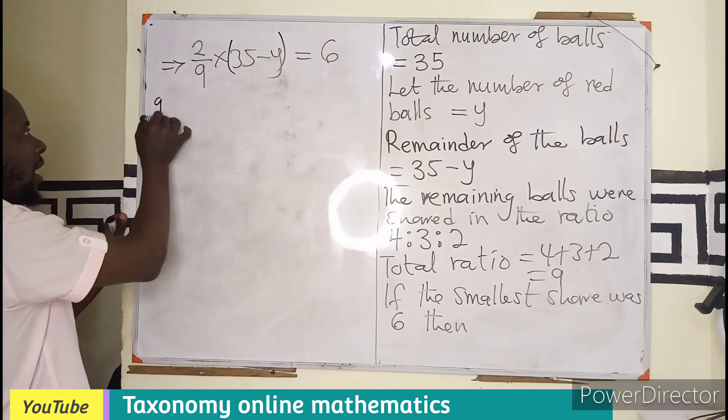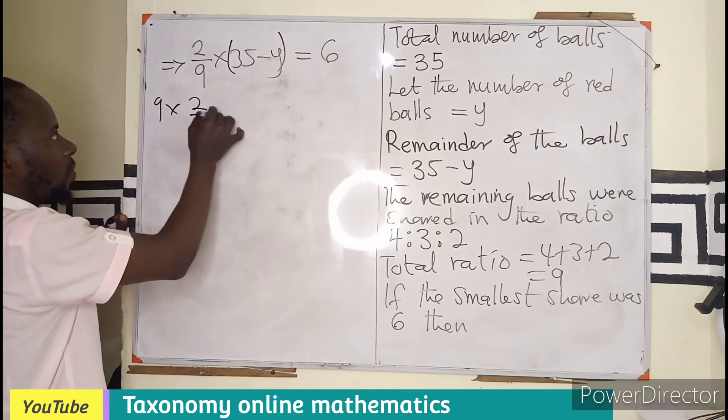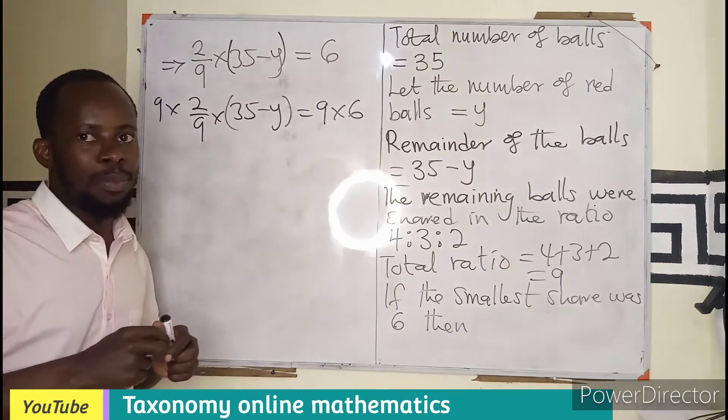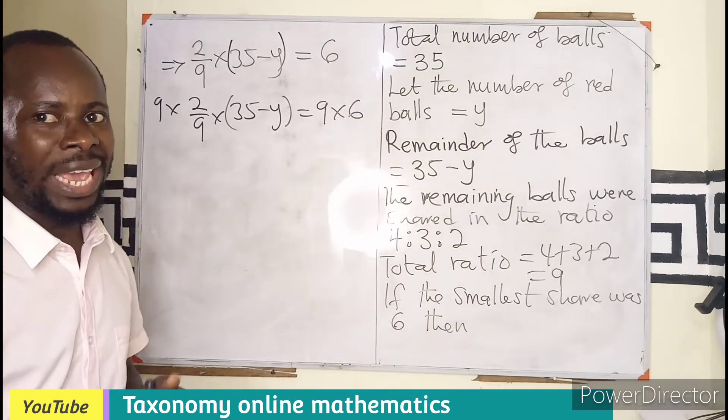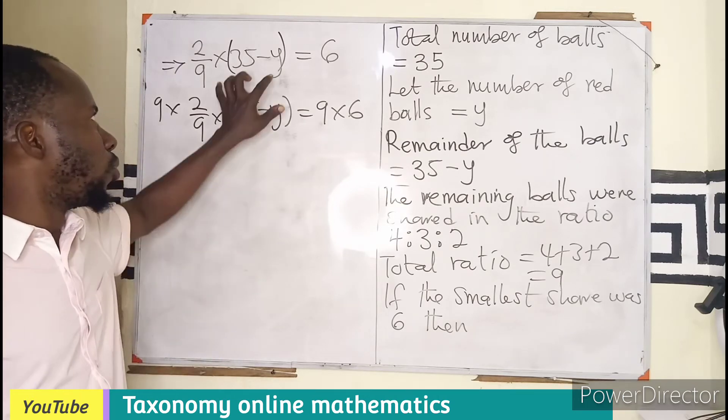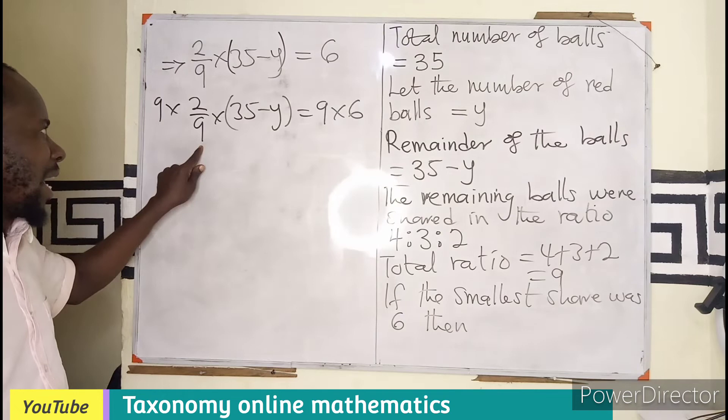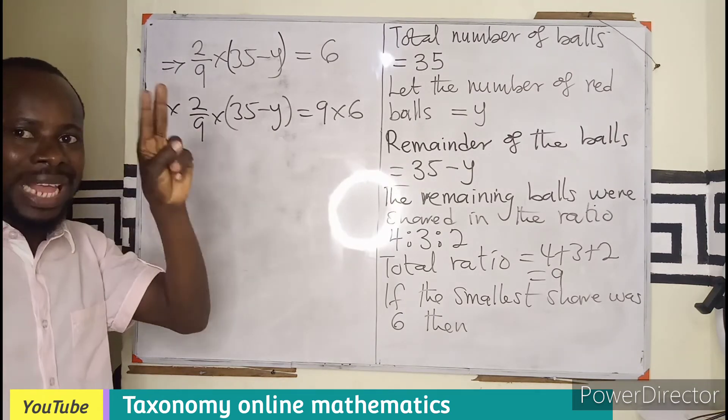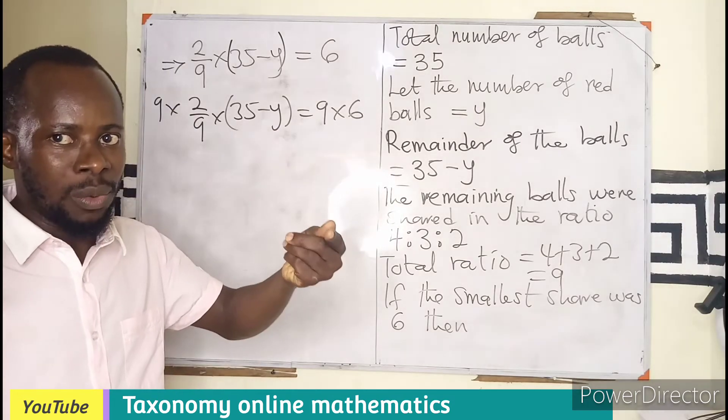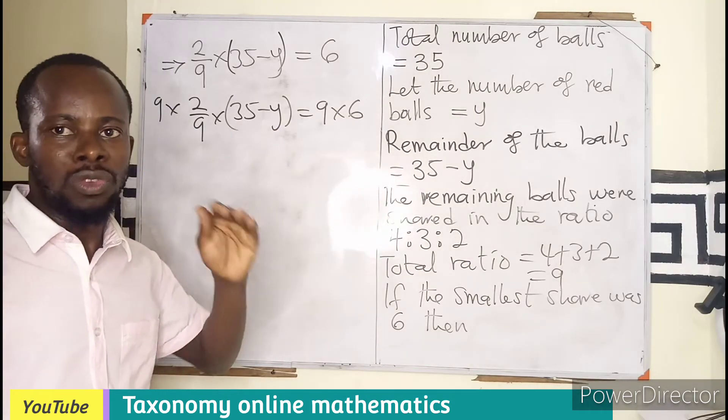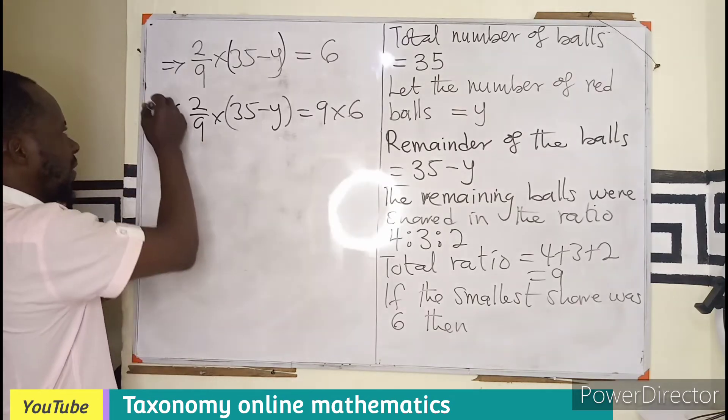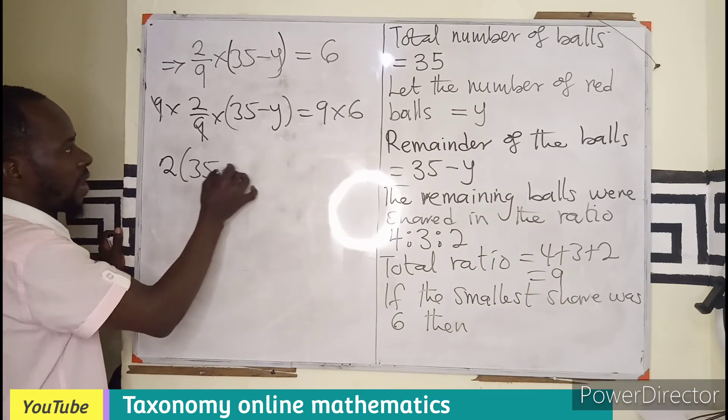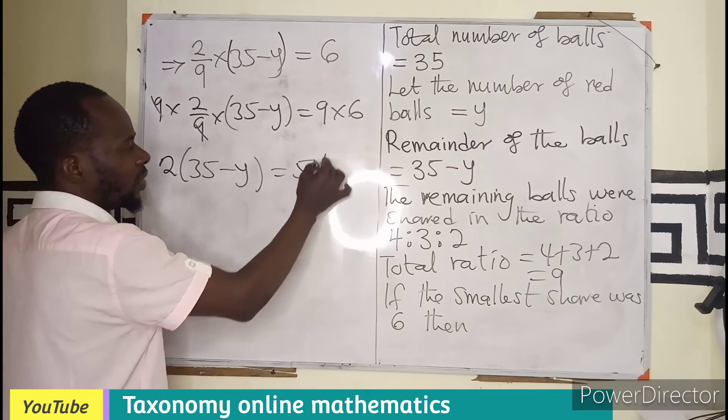You see I put 35 minus Y in bracket because they are one term. If you don't put into bracket you will be tempted to multiply 9 by this and minus 9Y. But because they are just one term, it is an answer provided we know the Y. We will have gotten the answer right away. So it is not two terms. So this will cancel. So I will be having 2 times 35 minus Y. I think this is 54.